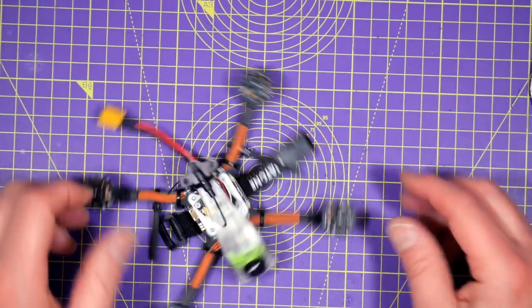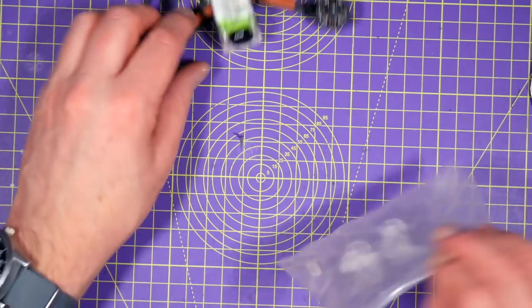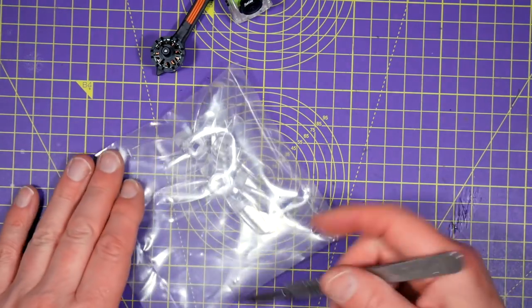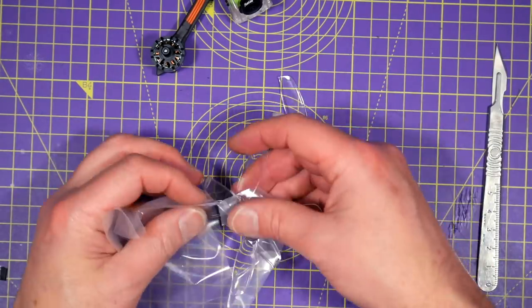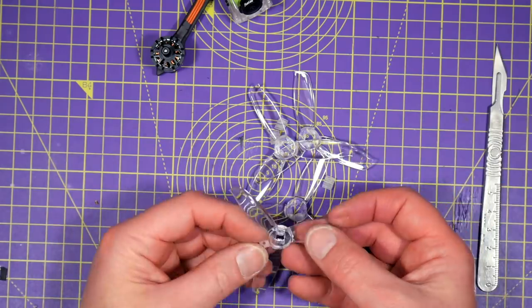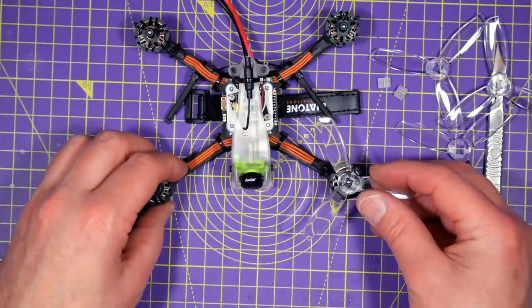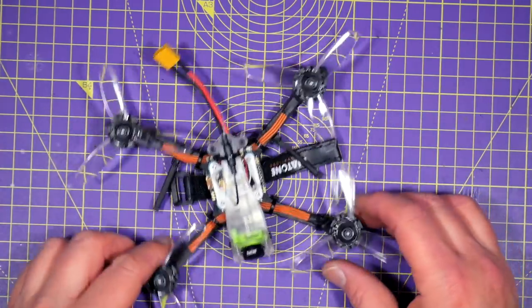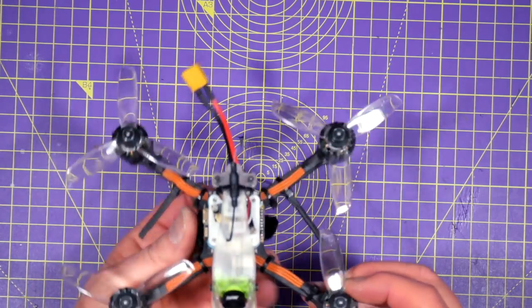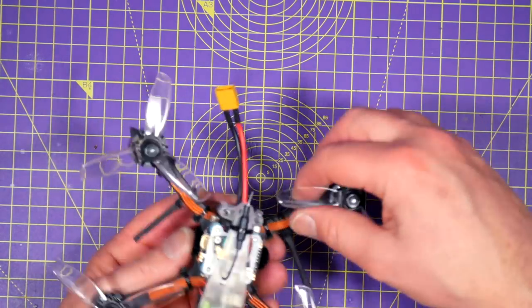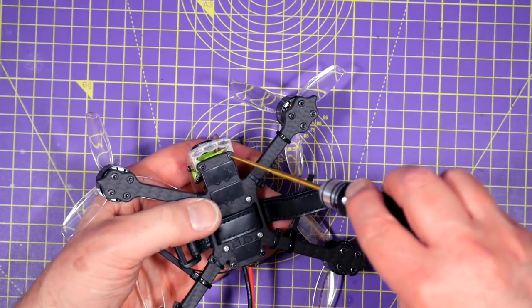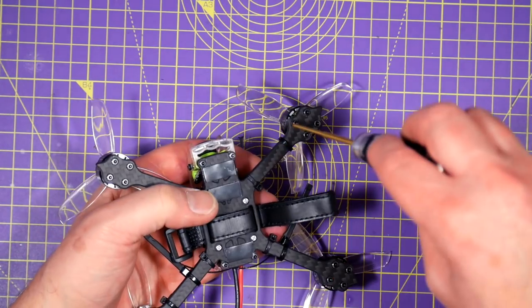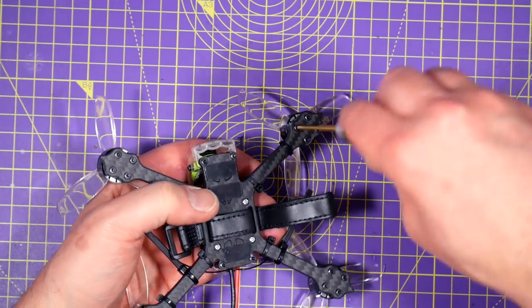So the last thing we need to do is just get some props bolted on, set up Betaflight and we're pretty much ready to go. Now all the props are on you just need to quickly go around and check all the bolts are nipped up and tight, just in case.